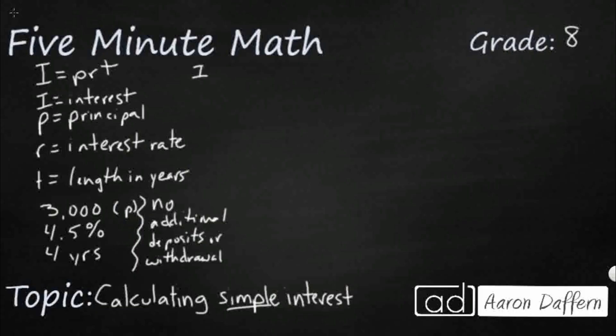So we literally just multiply those three things together: 3,000 times 0.045, that's the 4.5%, and then times four years.